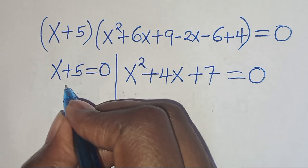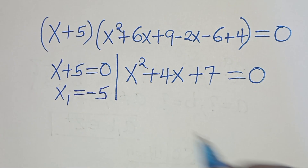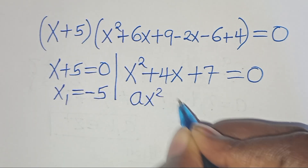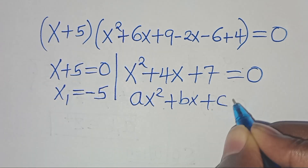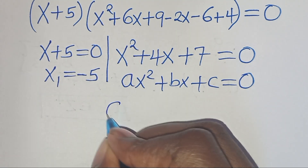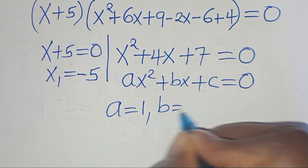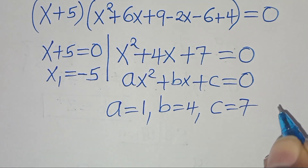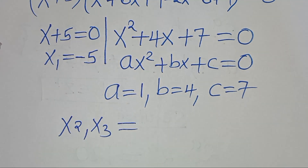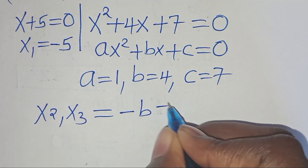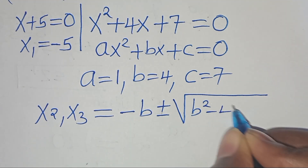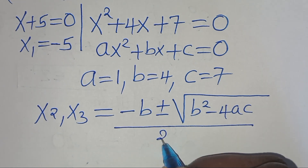From the first part here we have x1 equal to minus 5. The second part is a quadratic equation of the form ax squared plus bx plus c equal to 0. From this quadratic equation we have that a is equal to 1, b is equal to 4, and c is equal to 7. So we can solve for x2 and x3 by applying the quadratic formula, which is minus b plus or minus the square root of b squared minus 4ac, everything divided by 2 times a.